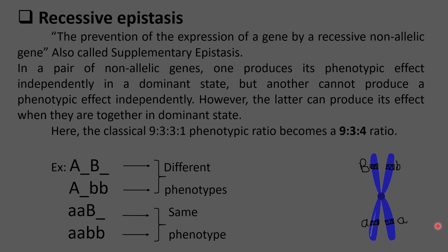For example, A and B are two different non-allelic gene pairs. Gene A can produce its own phenotypic effect independently in its dominant state — if homozygous dominant AA is present, it can produce its own character. However, gene B cannot produce a phenotypic effect independently. The recessive homozygous gene aa suppresses the expression of alleles at the B locus, but in the presence of dominant allele A, the alleles at locus A supplement the effects of alleles at locus B.